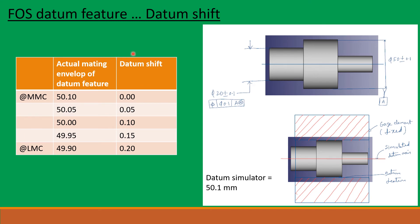Now let us do some calculations. Here on this part, this diameter is specified as datum A with a size of DIA 50 plus/minus 0.1. So its MMC size will be 50.1 and LMC size will be 49.9, giving a total tolerance of 0.2. The datum simulator size will be 50.1, that is the MMC size. In this table, at MMC its size is 50.1 and the datum shift is 0. As it departs from MMC towards LMC, at its LMC size of 49.9, the total datum shift is 0.2.